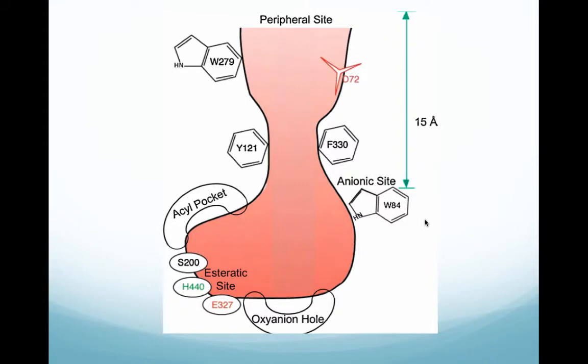One of the questions the structure of acetylcholinesterase raises is: how do the products of acetylcholine hydrolysis leave if the efficiency of the enzyme is so high? As you can see from this structure, it appears the only way the products could leave is by diffusing back up the gorge, which would definitely interfere with acetylcholine molecules entering the active site.